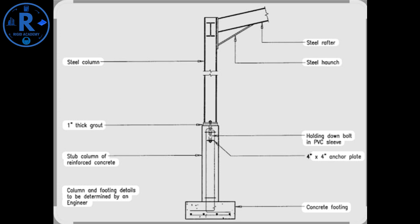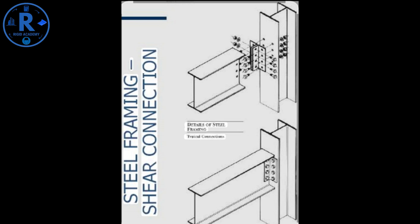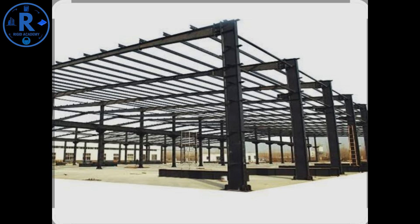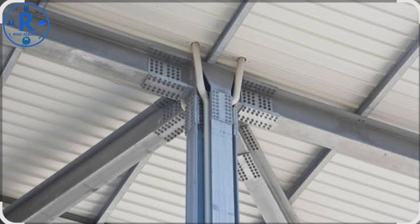Preparing detailed drawings. Your design should be documented in fabrication and erection drawings, including member sizes and lengths, connection details, bolt sizes and grades, welding symbols, and bracing layout. Rigid Academy reminder: Clear drawings reduce errors and speed up construction.